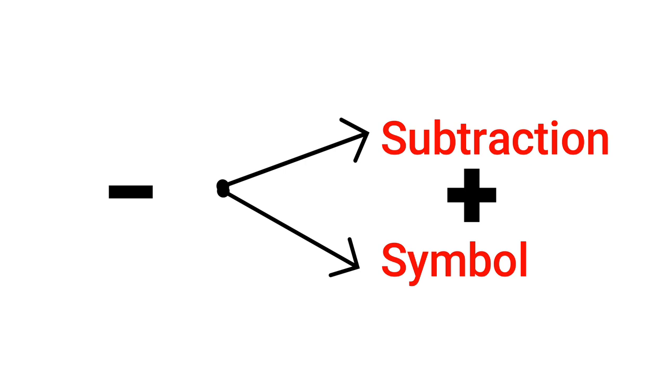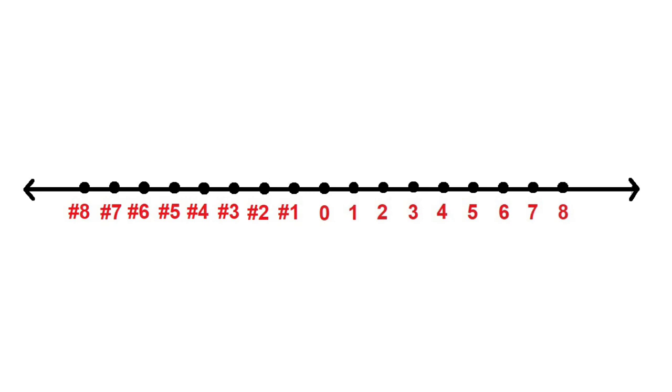For a moment, let us replace this negative sign with hashtag. And now if I ask you, what is the square root of hashtag 4? Then you can easily say it's hashtag 2. Because you have no problem with the sign. This negative sign in the number line is just a symbol. It is not subtraction.